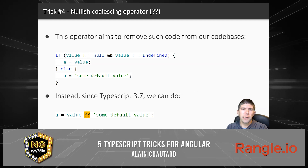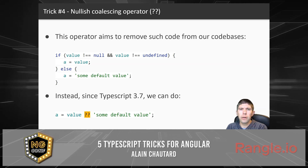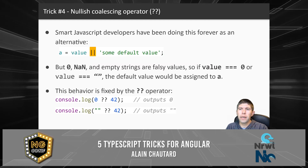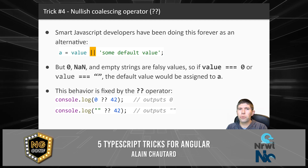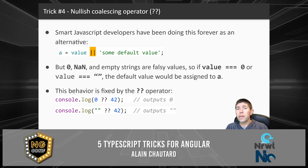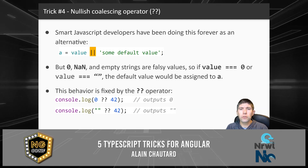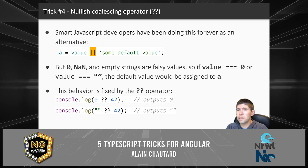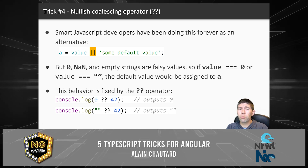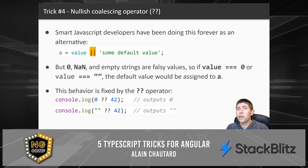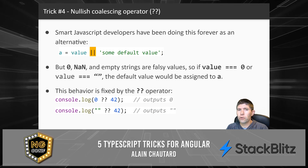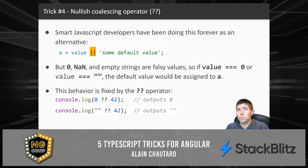Trick number four is the nullish coalescing operator, or the double question mark, which allows us to simplify our code when we want to assign a default value to a variable if a value is null or undefined. In the past, developers have used the logical OR operator for this, but the problem is that zero, NaN, and empty strings are falsy values in JavaScript — so if your value is zero or an empty string, you might accidentally end up using the default value. The double question mark operator fixes this behavior.